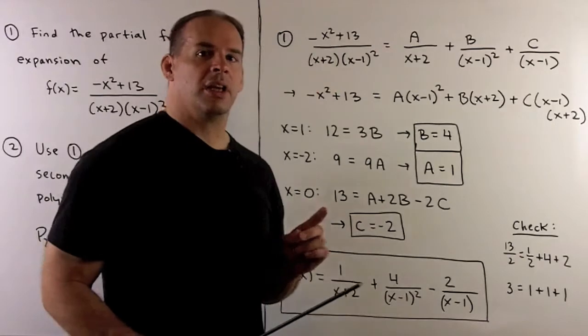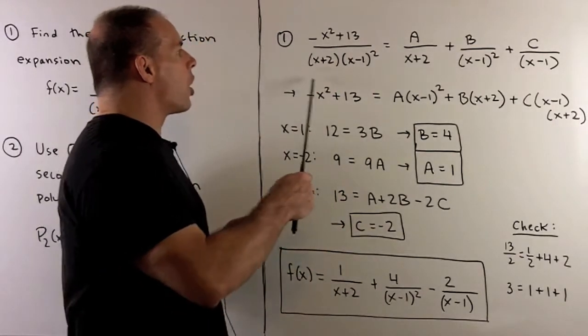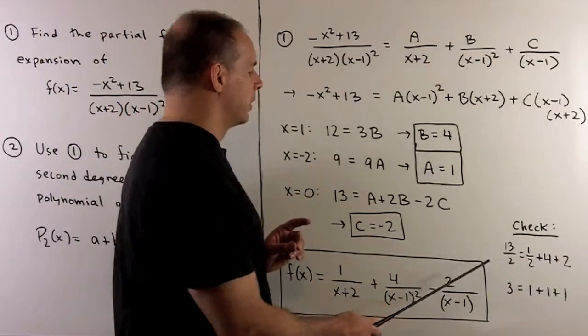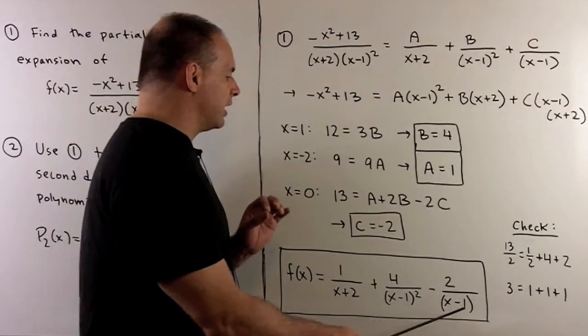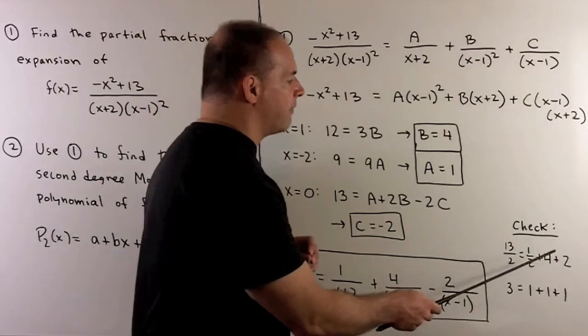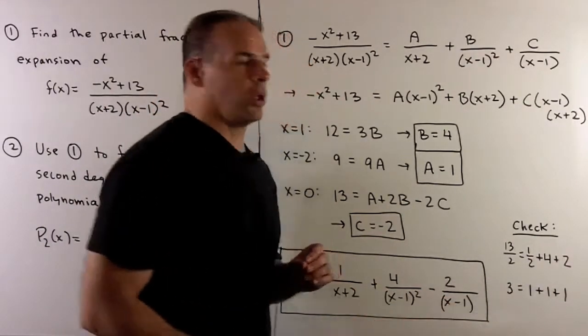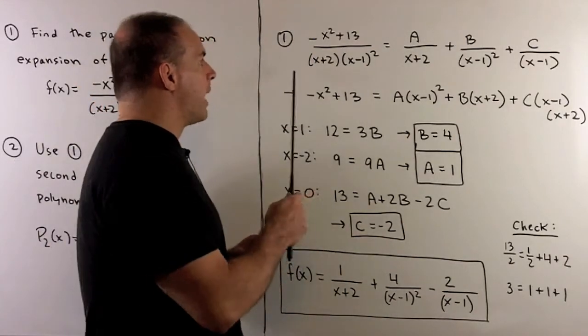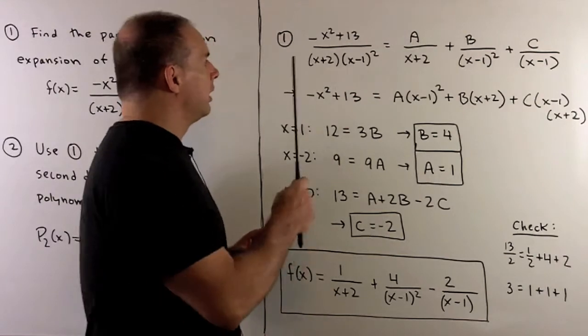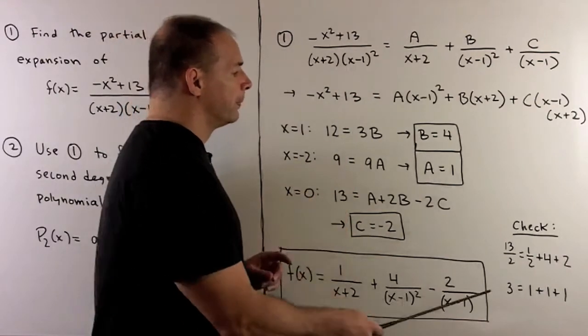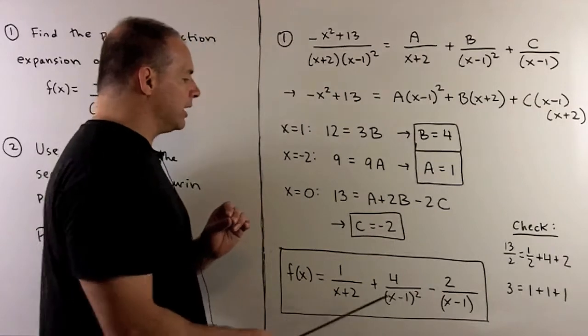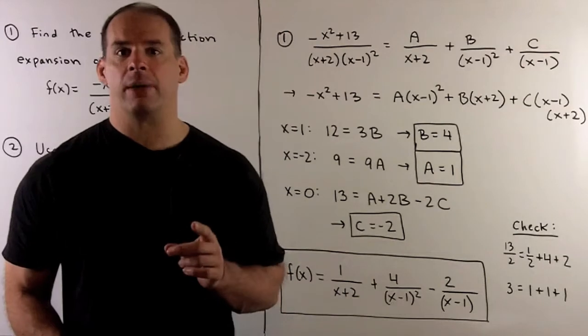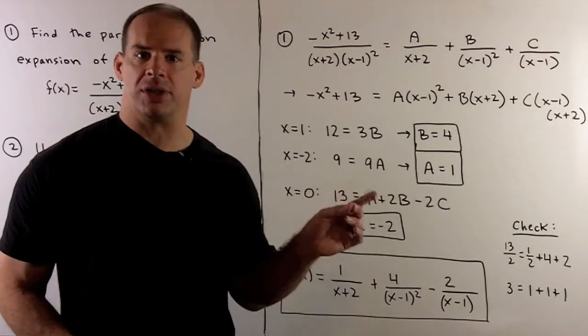For instance, if I let x be equal to 0, in our original rational function we'll have 13/2. If I put 0 into each of these terms, we wind up with 1/2 + 4 + 2, and those two items are equal, so that checks. We could also try x equal to -1. Here, when we work it out, we'll get 3. Then if I put -1 into each of these terms, we just wind up getting 1 + 1 + 1, so that checks out. Having checked two points, I'm more or less convinced that we're good.